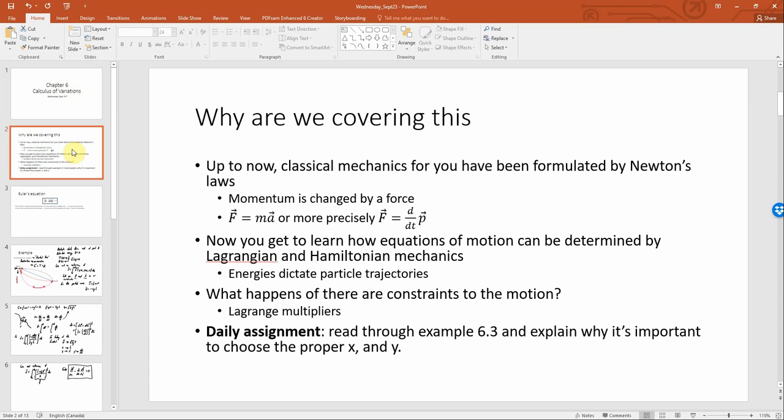So why are we covering this? Up to now, Classical Mechanics has been formulated by Newton's laws. Every particle has momentum, and this momentum is changed by a force: F equals ma, or more precisely, F equals d by dt of p. F and p are vectors. What we're going to learn over the next few weeks is how to set up mechanics according to scalars, using Lagrangian Hamiltonian mechanics. A scalar is just some number, like potential energy.